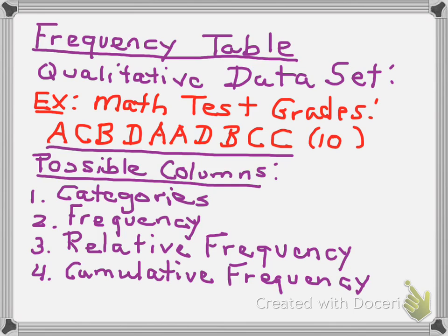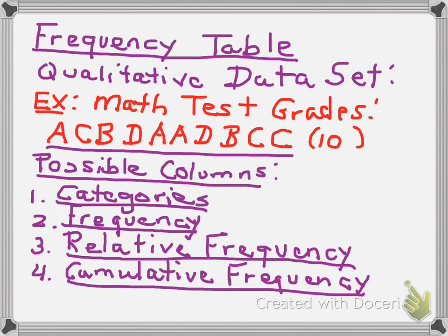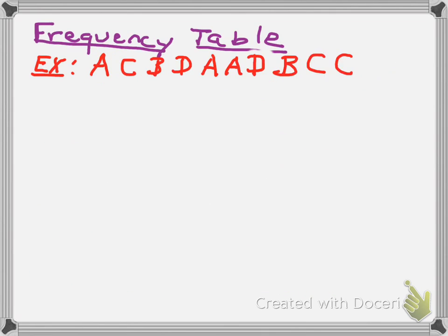So in a frequency table, we have four possible columns. The first column is your categories. Your second column is your frequency within each category. The third one is the relative frequency, which is just the frequency divided by the total number of data points. And it's usually converted to a percent. And the fourth column is your cumulative frequency. To calculate your cumulative frequency, it's the frequency of your current category plus the frequency of all preceding categories.